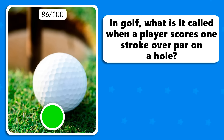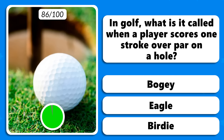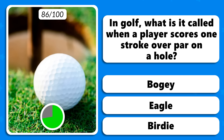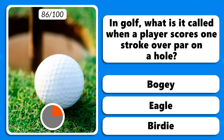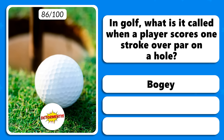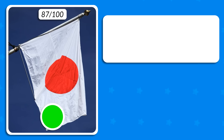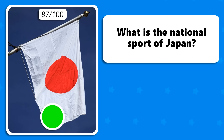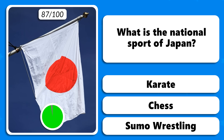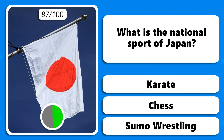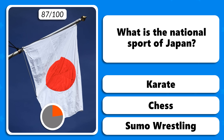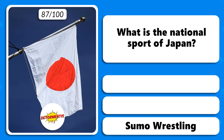In golf, what is it called when a player scores one stroke over par on a hole — a bogey, an eagle or a birdie? It's called a bogey. What is the national sport of Japan — is it karate, chess or sumo wrestling? The correct answer is sumo wrestling.